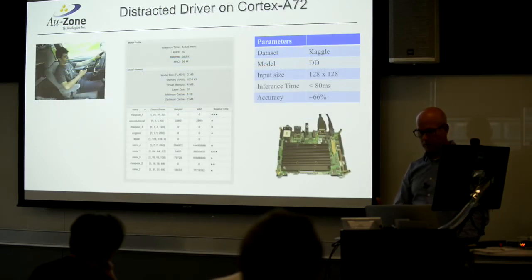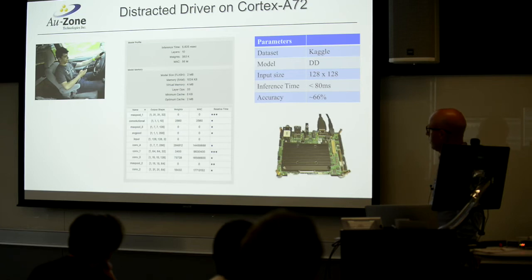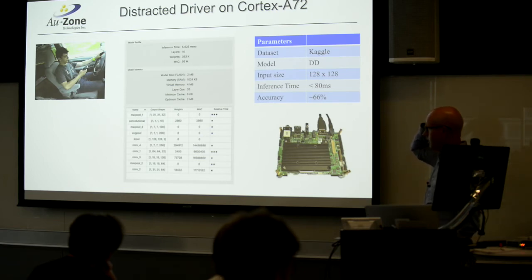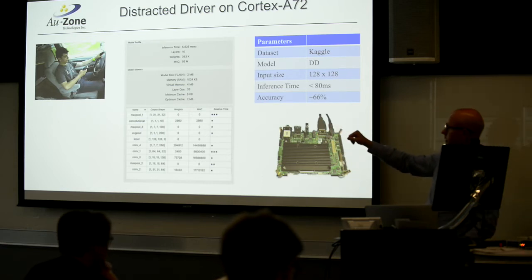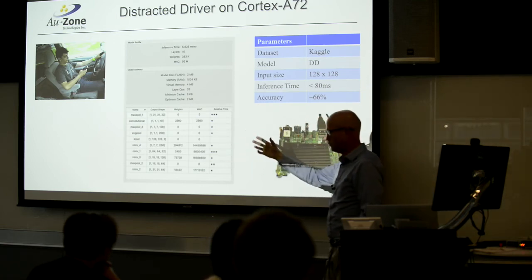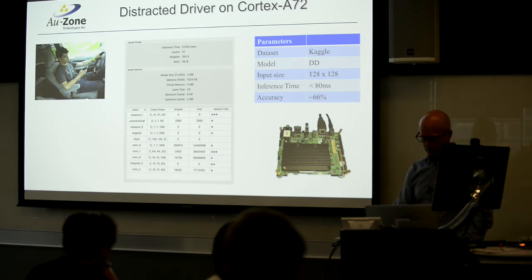Jumping up in performance to Cortex-A72: this is a distracted driver data set that's publicly available. We built a neural net to solve that problem — we get accuracy in the order of 66%, it takes about a day to train on a desktop, and it runs on this platform here. When you go in and refine the model to figure out which layers are consuming the most resources — compute, time, or memory — the chart gives you that information so you can iterate and improve the solution for your target device.